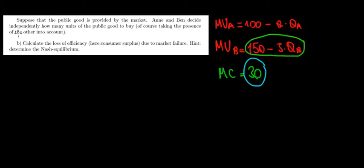Let's solve part B now. Suppose that the public good is provided by the market, so N and Ben decide independently how many units of the public good to buy. We need to calculate the loss of efficiency due to market failure.